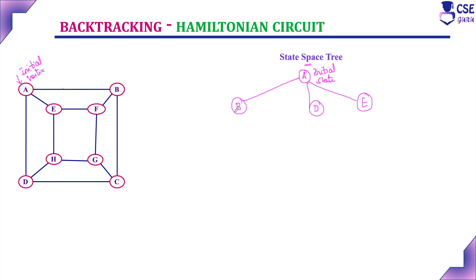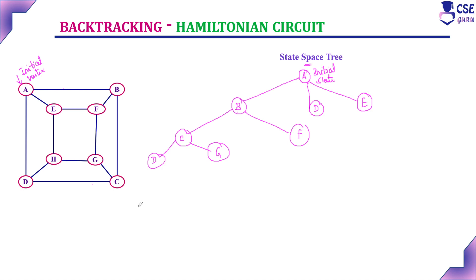Here A to B there is a path. Through B, there are two vertices: F and C, giving paths B to C and B to F. Then considering C, the connected vertices are G and D, so we can consider C to D and C to G. Next, consider through D. We construct the state-space tree depth-first — whenever we reach a dead end, we backtrack to the previous level and check for other possibilities. From D, there are three vertices connected: A, H, and C. In this path, A is already visited and C is already visited.